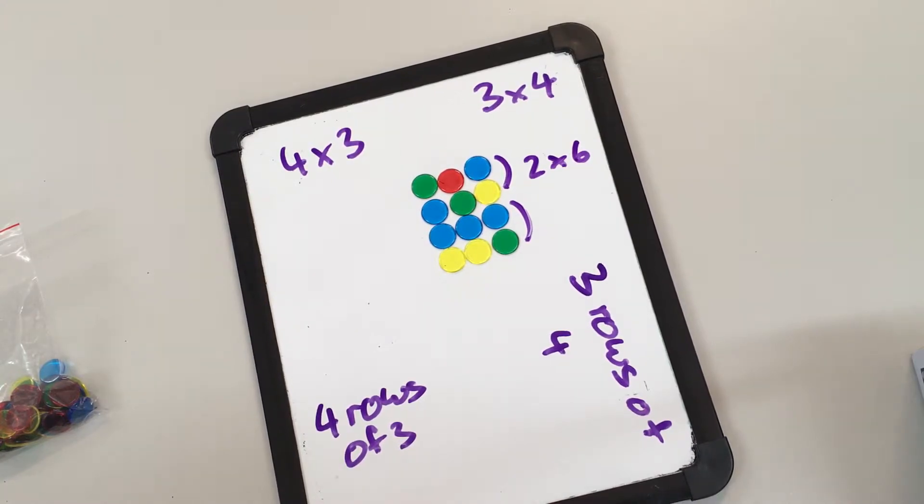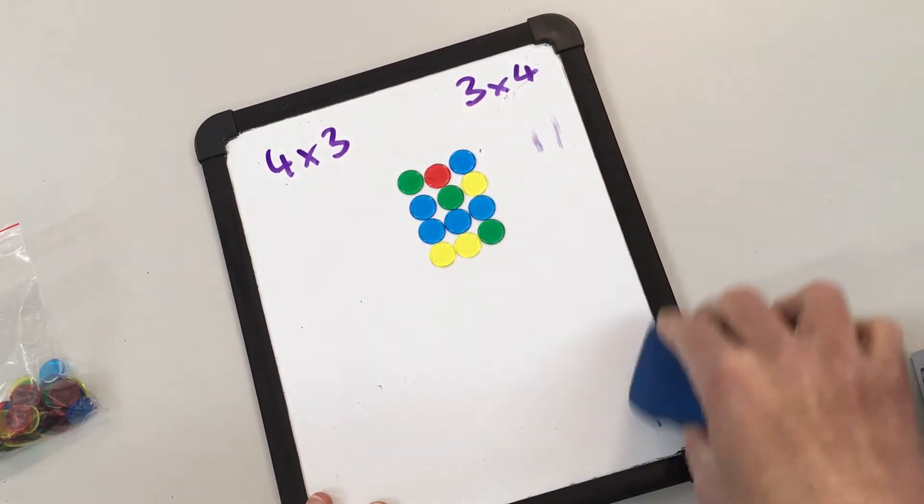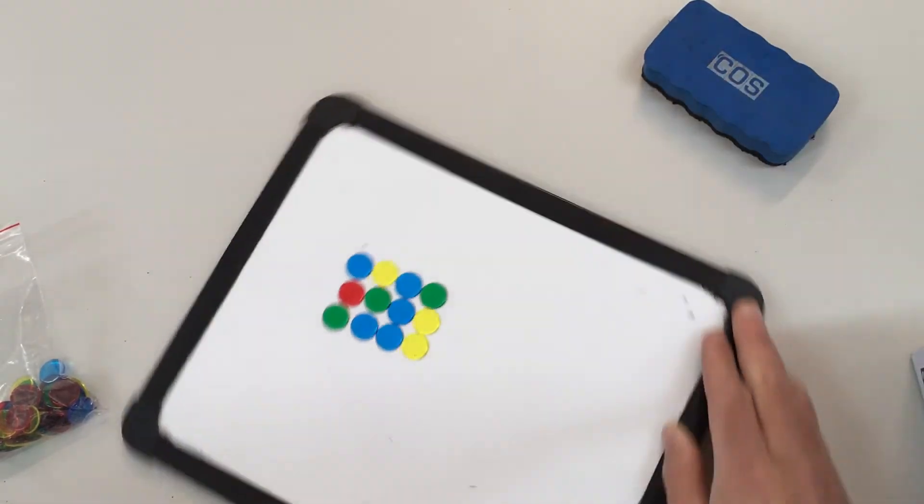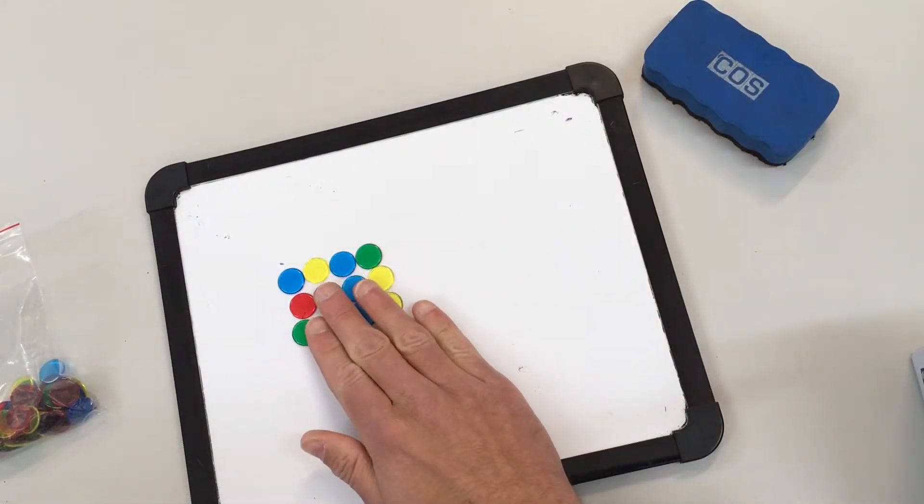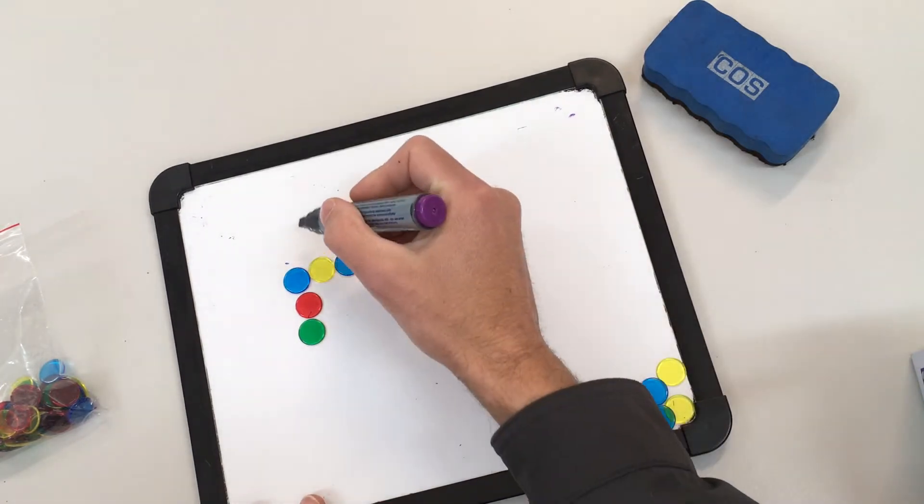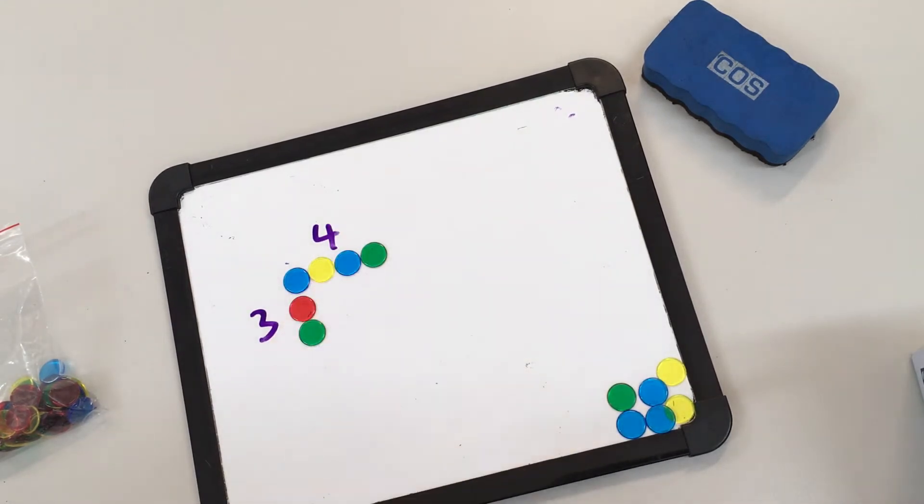The next step when using arrays is to use a partial array. So if your child is very good at building arrays, you might want to challenge them by doing a partial array. A partial array is when we get rid of these counters, so now I have got my three rows of four, and your child will have to try and visualize the counters that are missing to try and work out this multiplication fact.